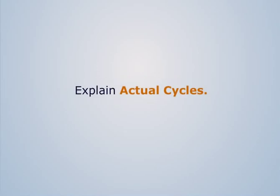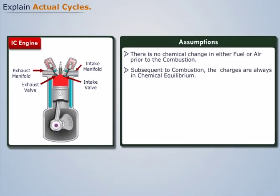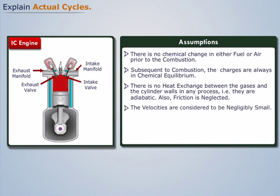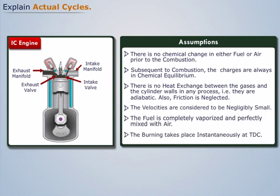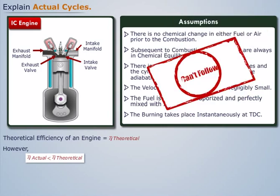Explain actual cycles. In the fuel air cycle we consider the following assumptions. Following these assumptions we get the theoretical efficiency for an engine. However, in actual practice the efficiency achieved by an engine is less than its theoretical efficiency. This is because we cannot follow these assumptions practically.